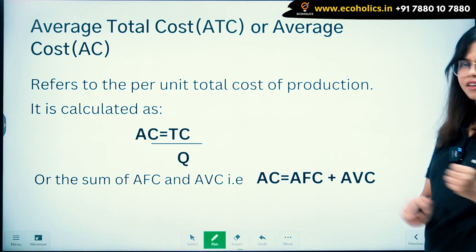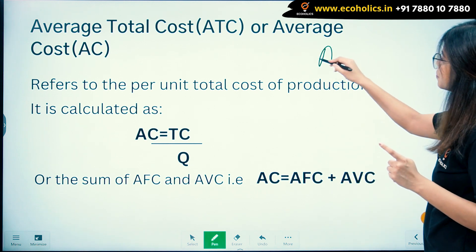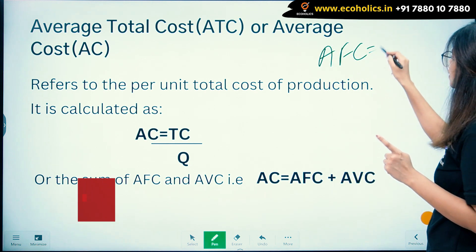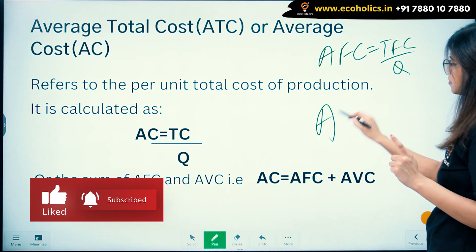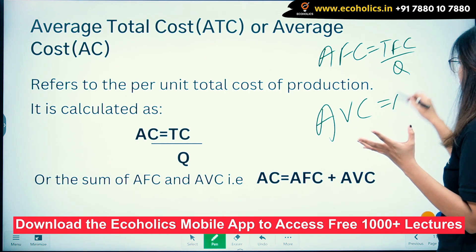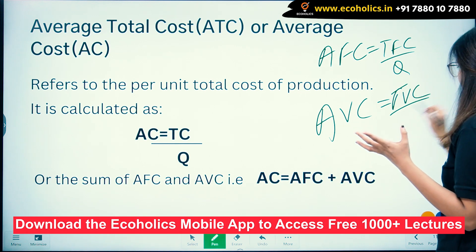Now we are understanding Average Cost. We know what is AFC - TFC by Q. AVC is TVC by Q.